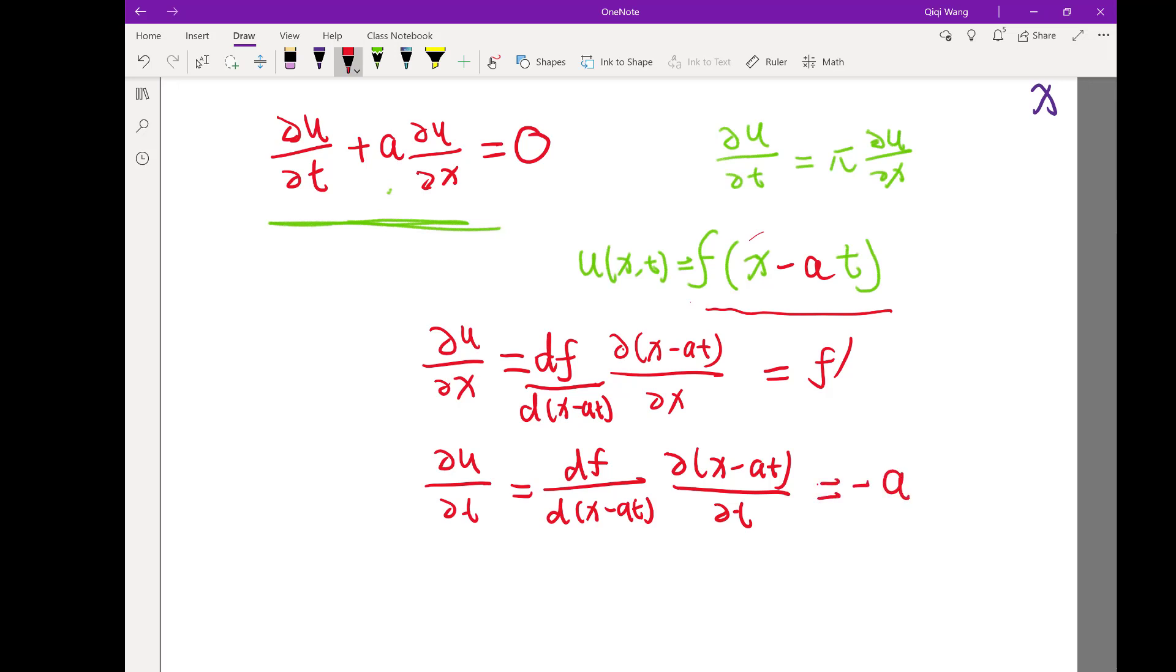So if we combine them, look at this equation: ∂u/∂t, which is this guy, plus a times ∂u/∂x, which is this guy—a times this guy is zero for sure, for any f.